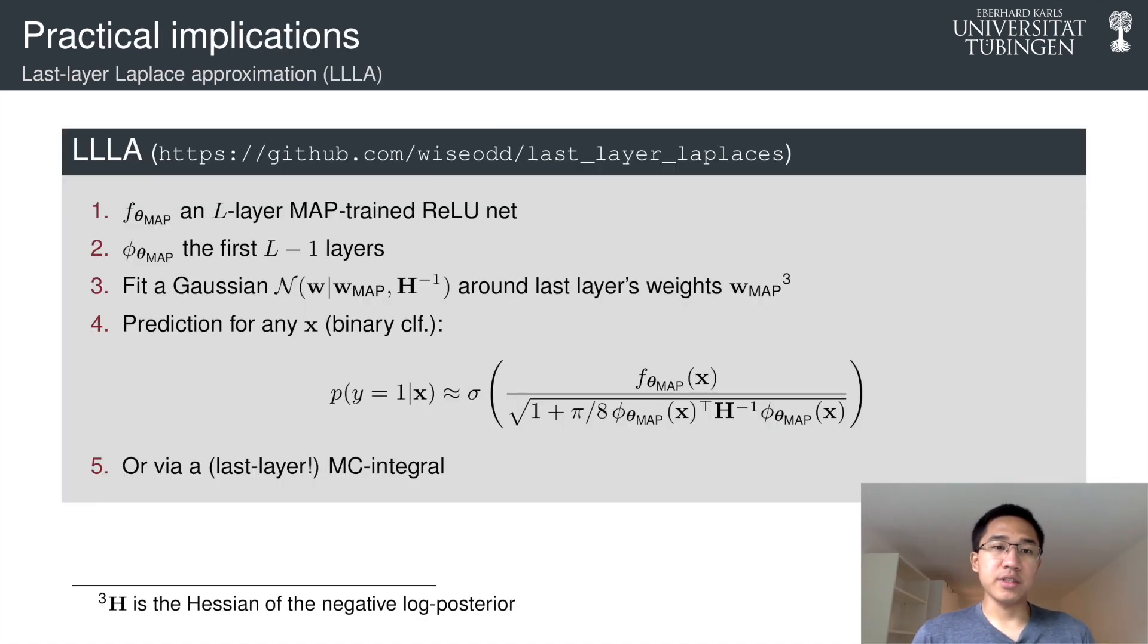The practical implication of this is that we can have a simple but effective algorithm or method to overcome this confidence issue. So this is basically just saying that given any pre-trained MAP-trained ReLU network, you can just apply a last layer Laplace approximation.